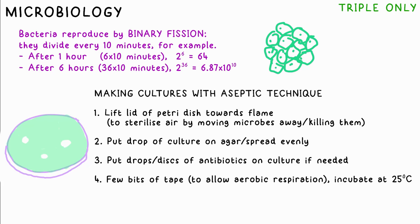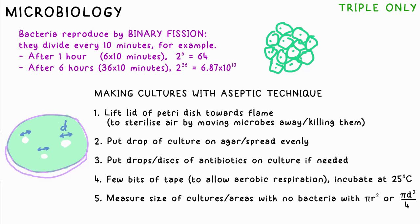We put a few bits of tape around the dish to hold the lid on, but not all the way around, otherwise air will not get in and the bacteria will respire anaerobically. We then incubate it at 25°C. Once the culture has grown, we can calculate the size of the culture from an initial drop, or the area in which bacteria did not grow or were killed by an antibiotic, using πr² or πd²/4 to calculate the area of the circles.